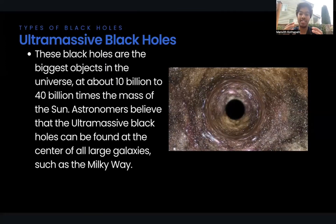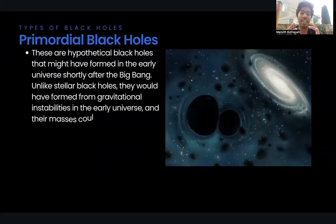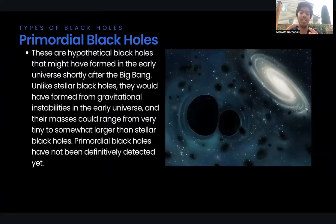These black holes are the biggest objects in the universe, at about 10 million to 40 billion times the mass of our own Sun. Astronomers believe that ultramassive black holes can be found at the centers of large galaxies, such as the Andromeda galaxy or other galaxies. So, now let's talk about primordial black holes. These are hypothetical black holes that have formed in the early universe shortly after the Big Bang. Unlike stellar black holes, they would have formed from gravitational instabilities in the early universe, and their masses could range from very tiny to somewhat larger than stellar mass black holes. Primordial black holes have not been definitely detected yet.